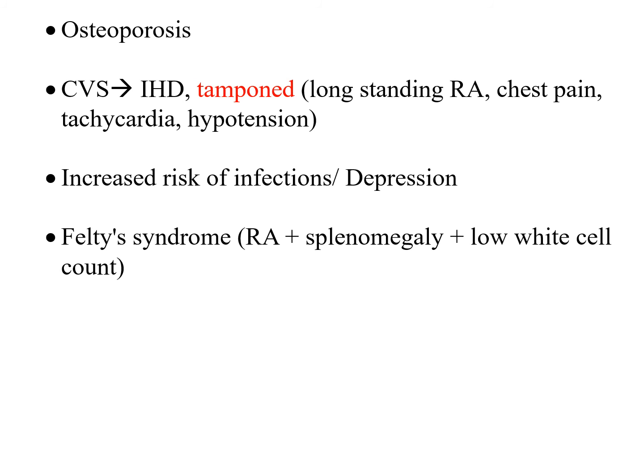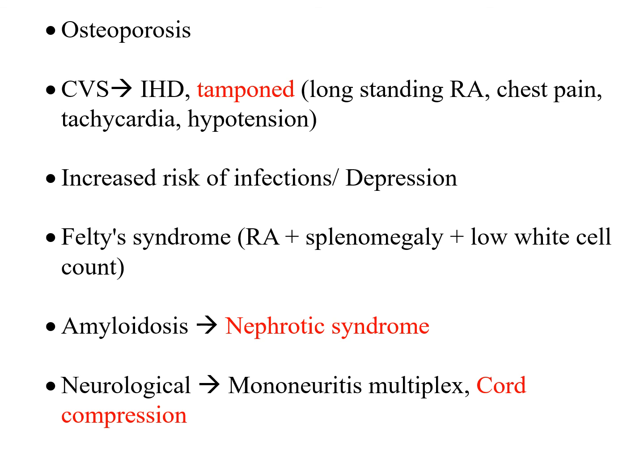There is an increased risk of infection and depression. Felty syndrome, which is quite rare, is a combination of rheumatoid arthritis with splenomegaly and neutropenia. The patient can present with nephrotic syndrome secondary to AA amyloidosis, involving deposition of amyloid fibrils in the kidney, presenting with pedal edema and proteinuria. Neurologically, mononeuritis multiplex involves two or more non-contiguous nerves, such as the ulnar and common peroneal nerve, or the oculomotor and median nerve. They can also present with cord compression, which is a neurological emergency.